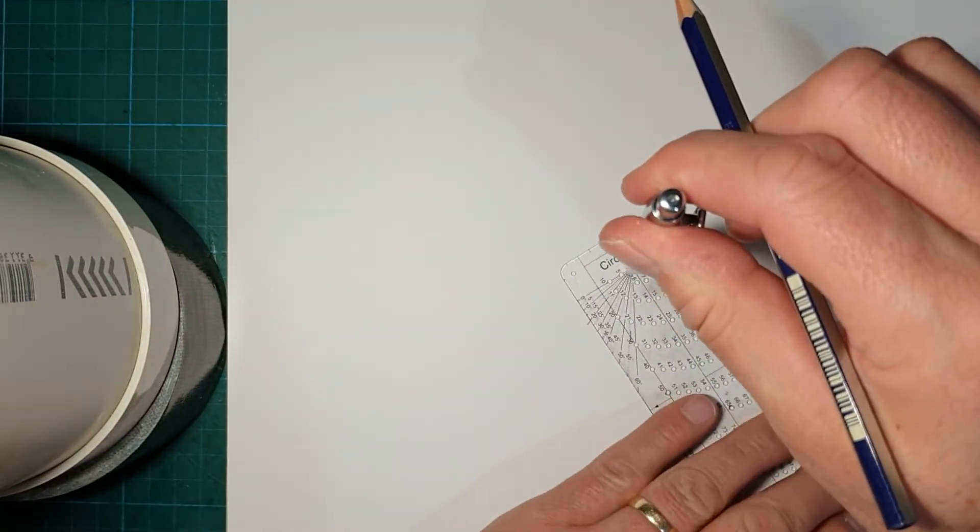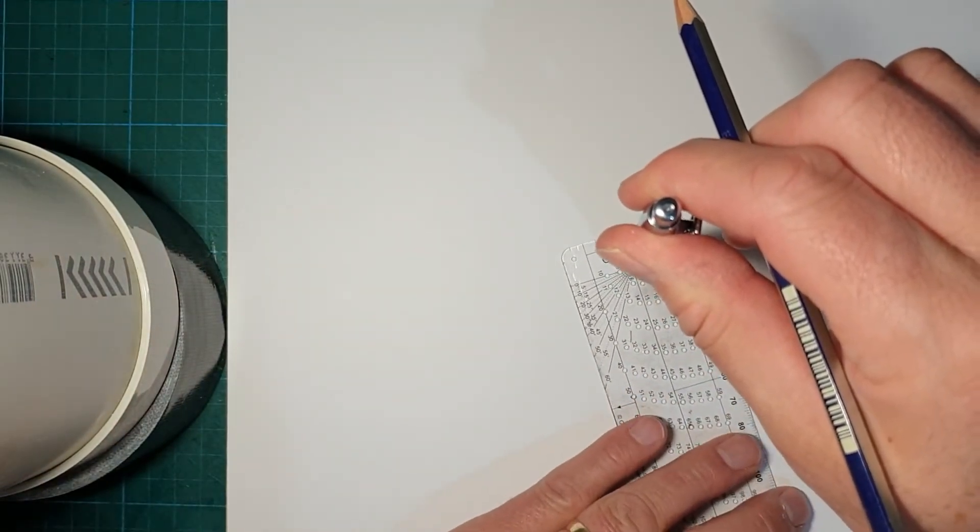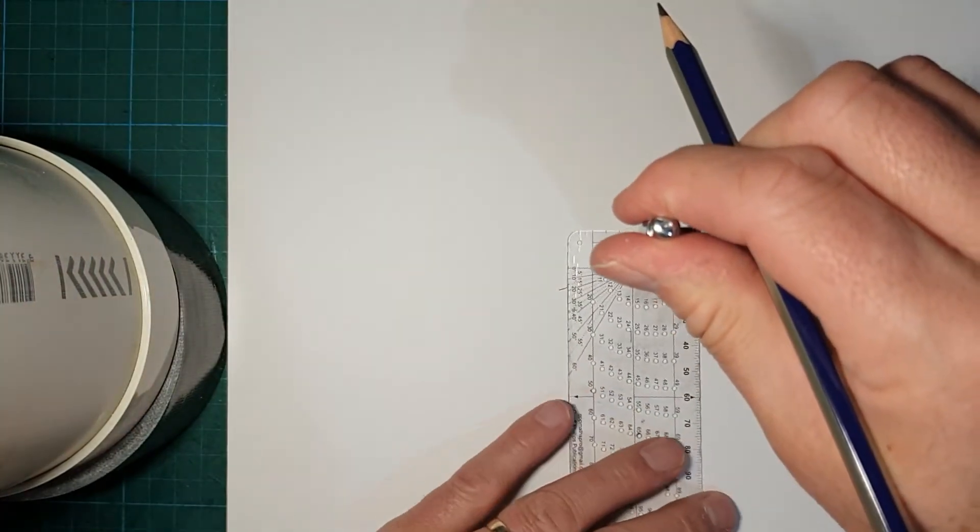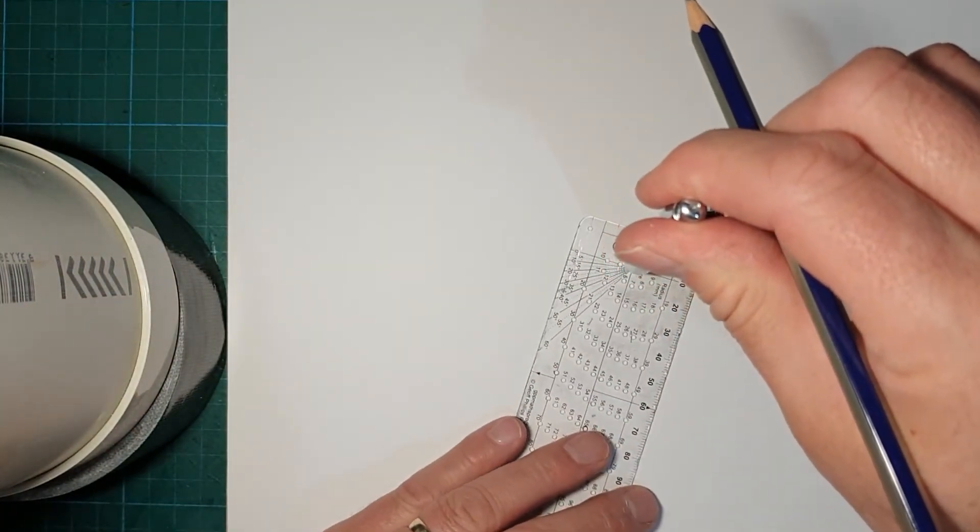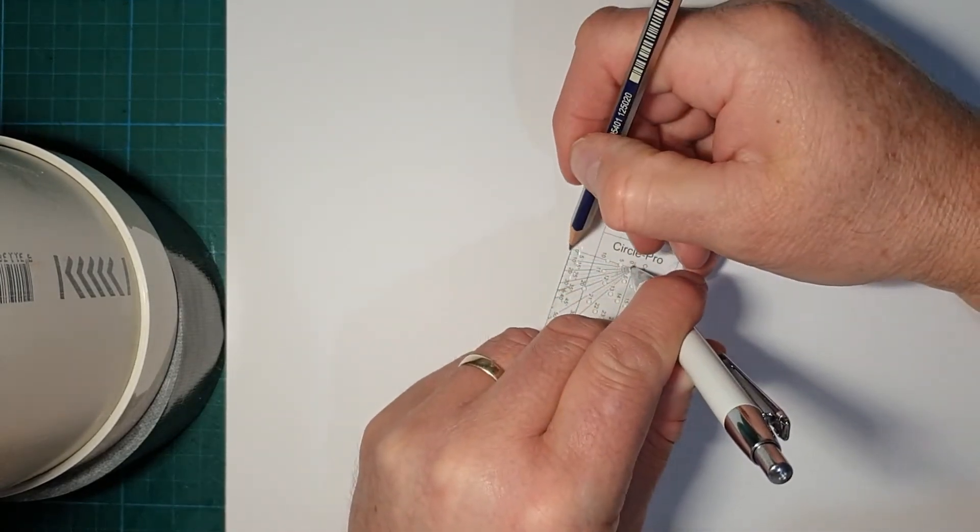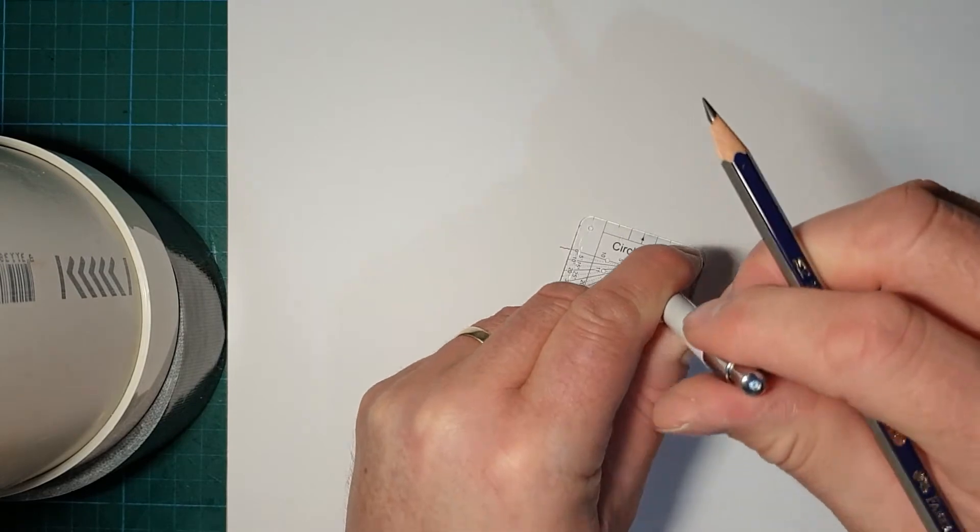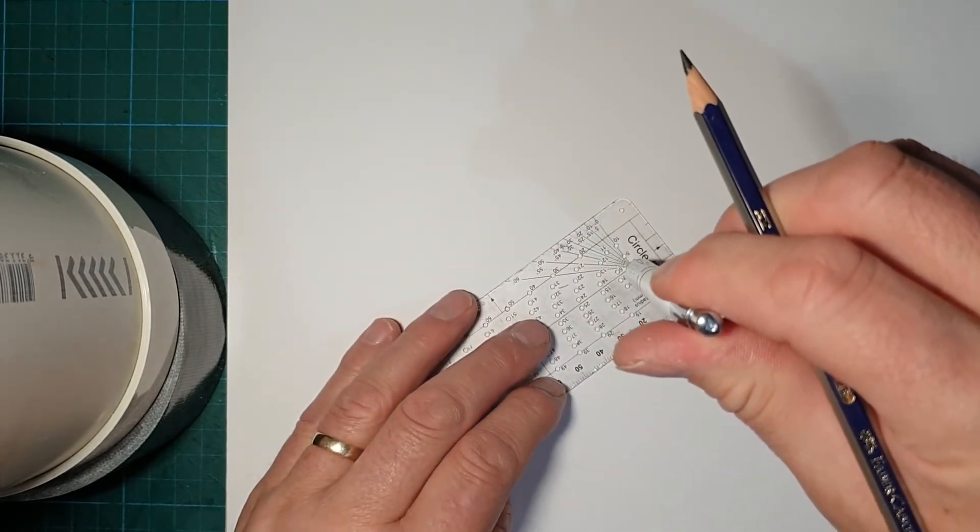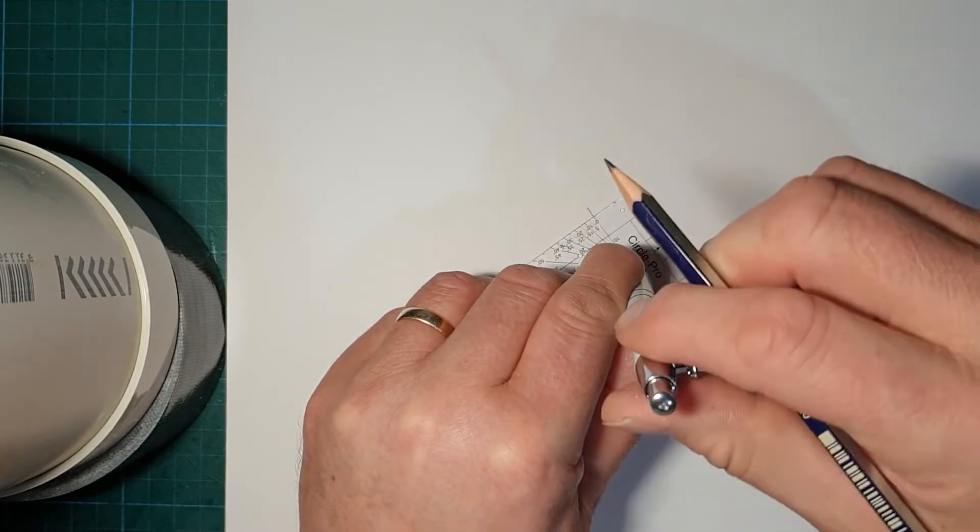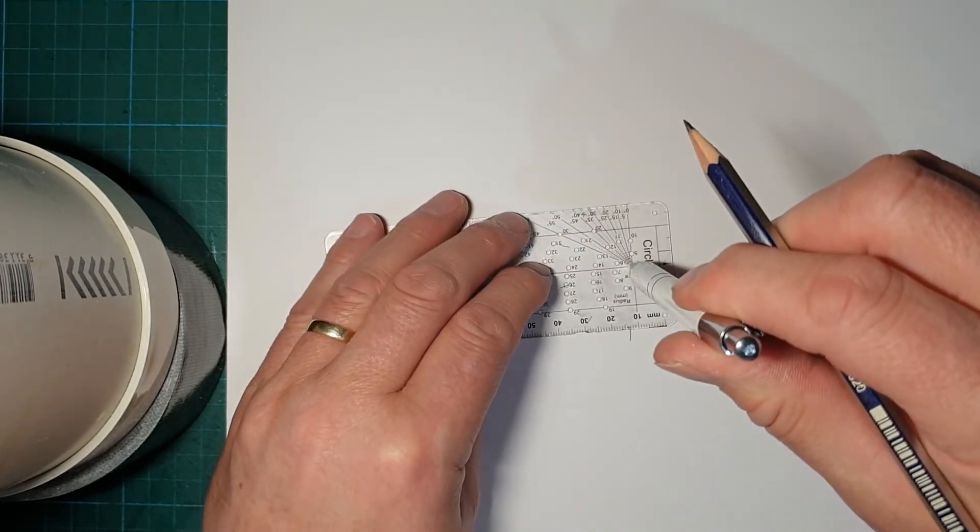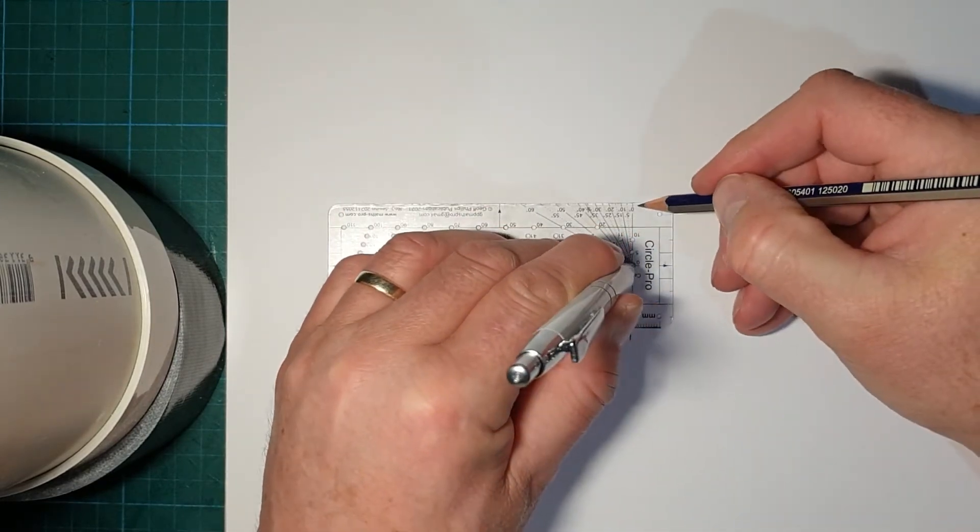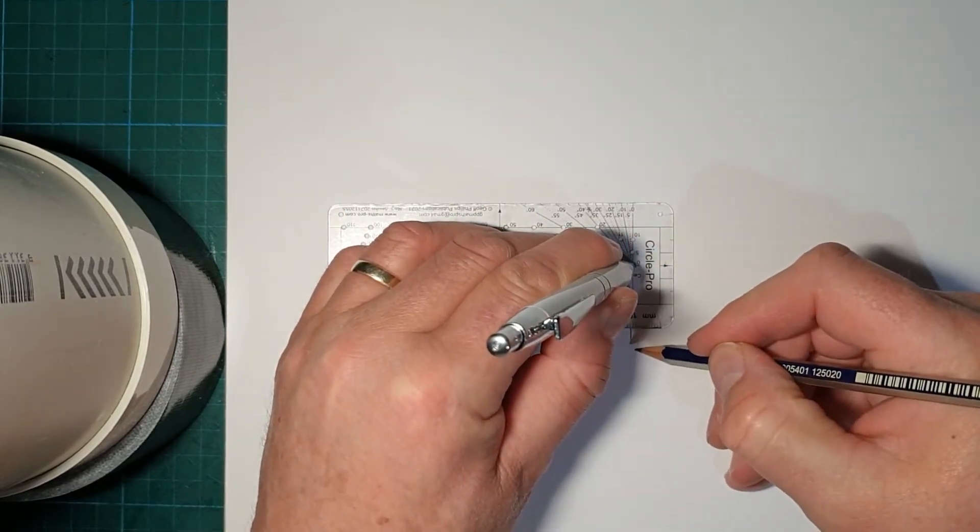We continue in that fashion and mark the zero. You need to line up 36 degrees. Looks like it's about there. Mark zero. One more. Actually I'll do another one. 36 degrees.